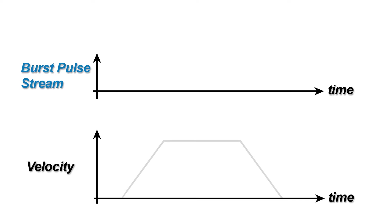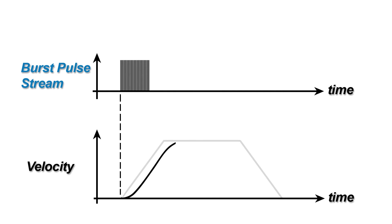RAS is a feature that automatically controls the acceleration rate — technically the jerk and jerk derivative — so that all changes in speed are made very smoothly to minimize noise and vibration.